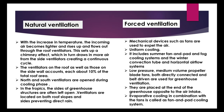Forced ventilation: Mechanical devices such as fans are used to expel air for uniform cooling. This includes summer fan-and-pad and fog cooling systems, and winter convection tube and horizontal airflow systems. Low-pressure, medium-volume propeller blade fans — both directly connected and belt-driven — are used for greenhouse ventilation. They are placed at the end of the greenhouse opposite to the air intake. Evaporative cooling in combination with fans is called the fan-and-pad cooling system.